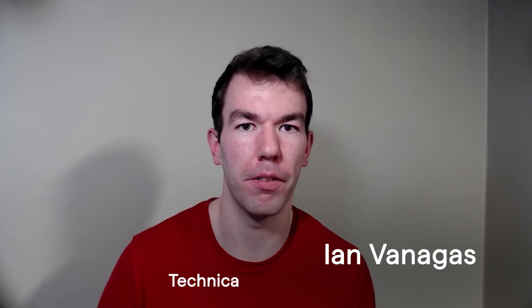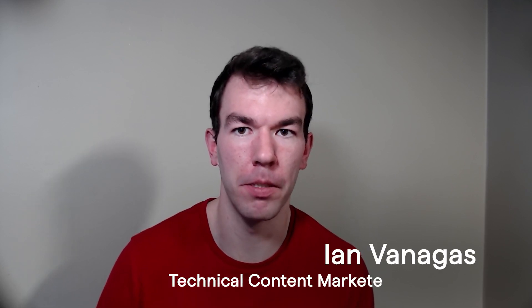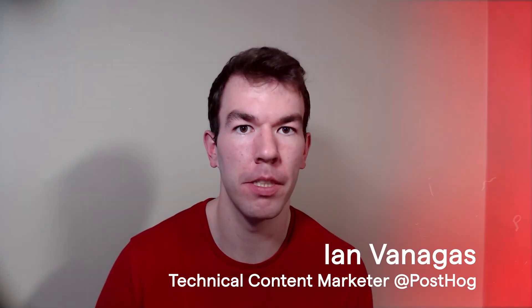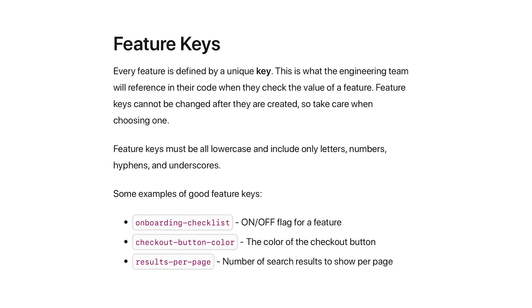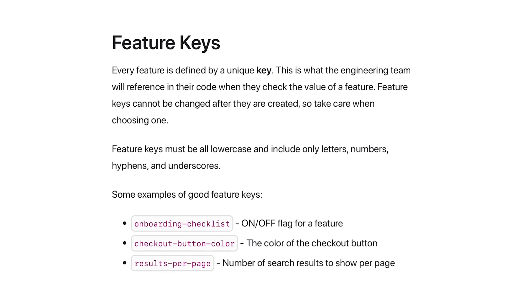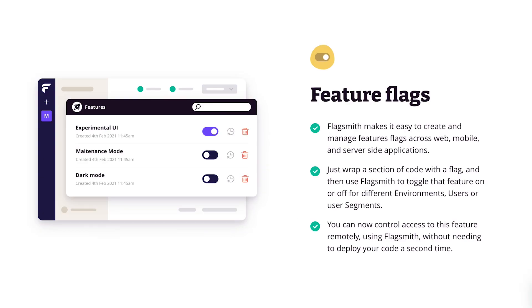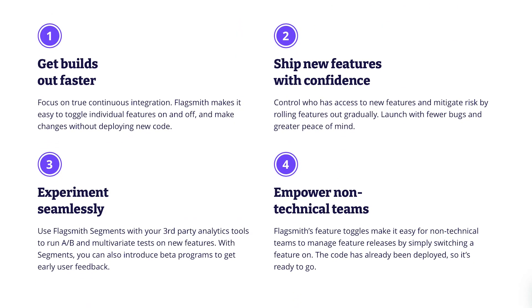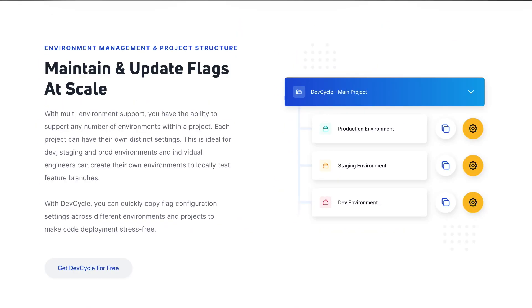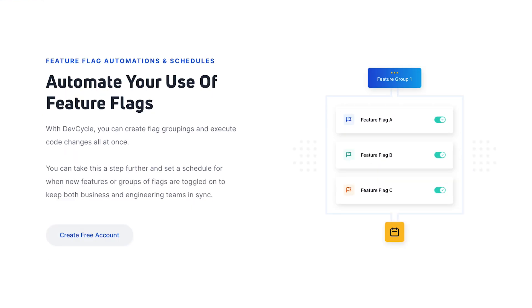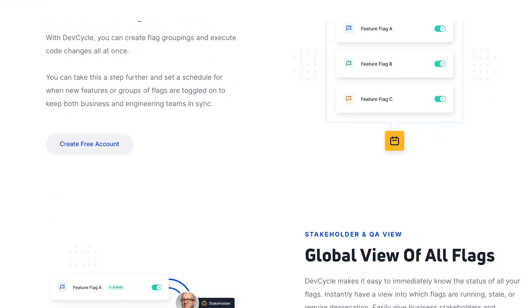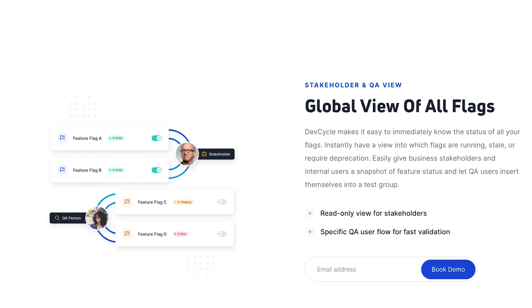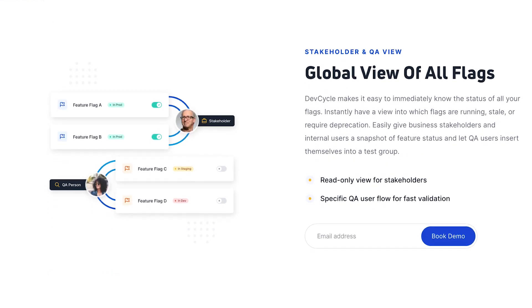Feature flags are a powerful tool trusted by software development teams of all types. They allow you to turn on or off features, components, and functionality without changing the code. Teams use them to safely release features, run experiments, and control access.